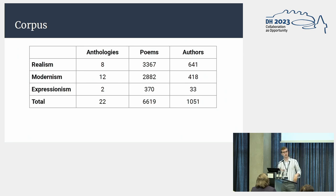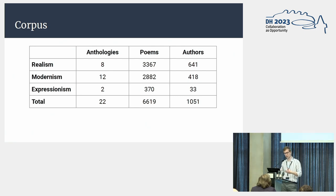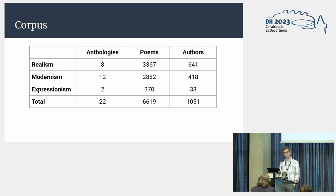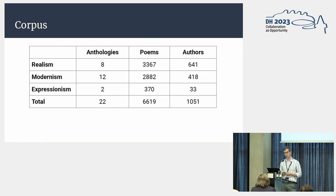Our corpus consists of texts in 22 anthologies from the period under study, containing then-contemporary German language poetry. It is possible to divide the anthologies into three parts along different literary periods. We have eight anthologies with more than 3,000 poems from the literary period of realism — that is, the 1850s until the early 1880s. We have 12 anthologies with slightly less than 3,000 poems from modernism, around 1900. And there are two anthologies from expressionism with 370 poems published in the 1910s.